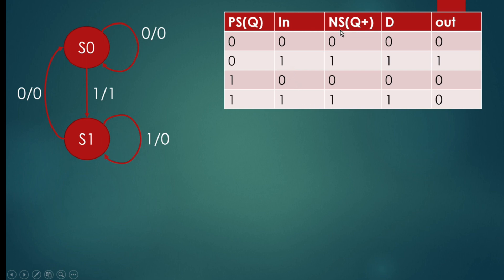To get this next state, if we are using D flip-flops, D should equal the next state directly. When we want next state to be 0, D should be 0. When we want next state to be 1, D should be 1, and so on.